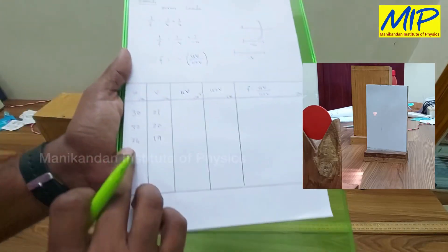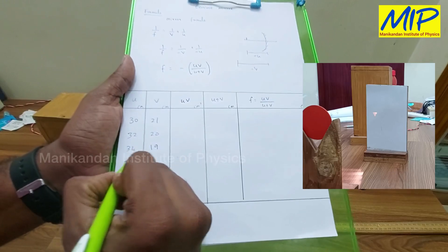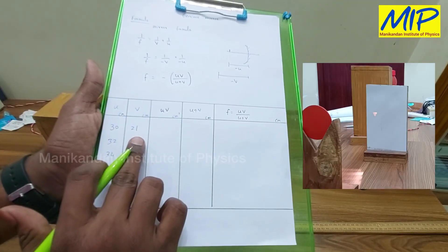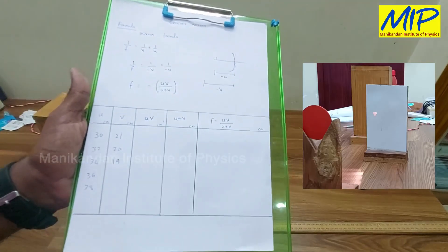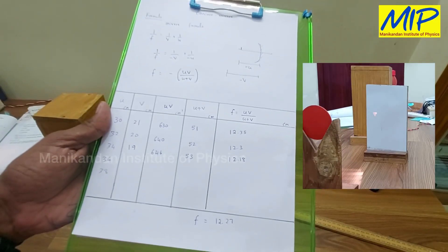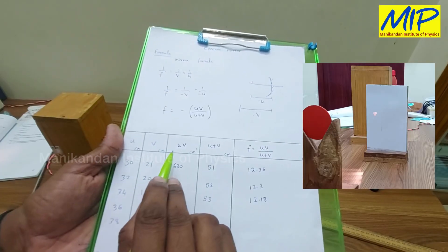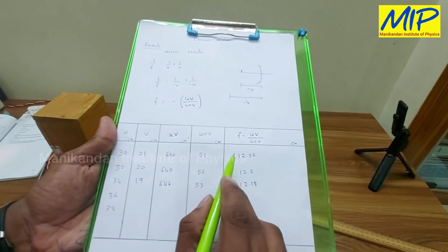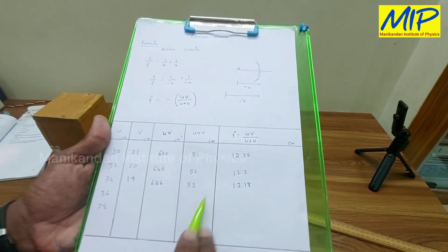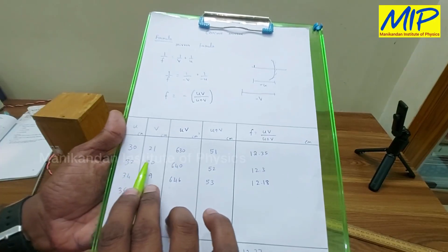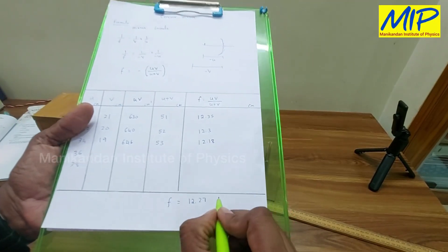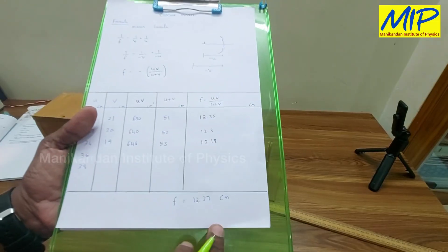Similarly, we vary u from 36 to 38 centimeters and find the corresponding v values. Using these u and v values, we find uv and u + v, then calculate the focal length. For u = 30, uv = 630 and u + v = 51. Taking the average of all observations, f = −uv / (u + v), giving us f = 12.27 centimeters as the focal length of the given concave mirror.